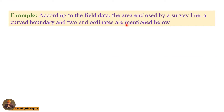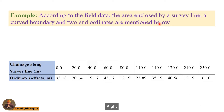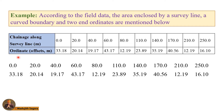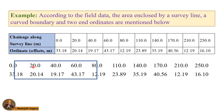This is my problem: according to the field data, the area enclosed by a survey line, a curved boundary, and two end ordinates are mentioned below. Here you can see the corresponding situation. First of all, we need to identify the corresponding intervals. To make that easy I will use a list. Here you can see one interval — the gap between these two ordinates is 20 meters. There are four intervals of 20 meters each.